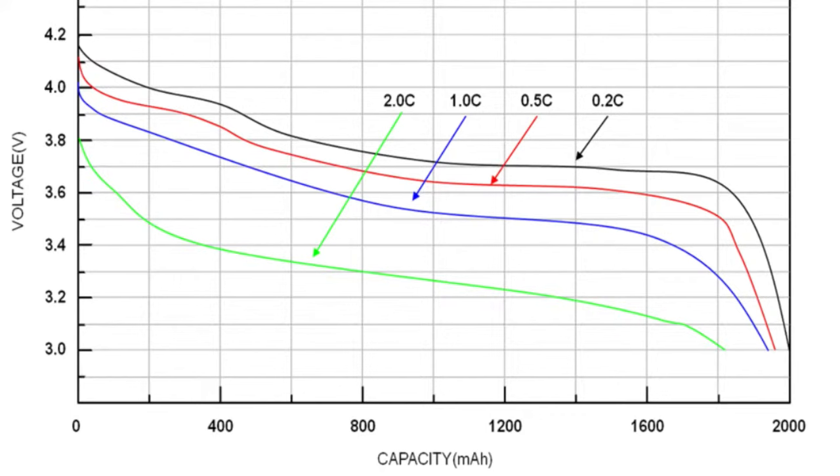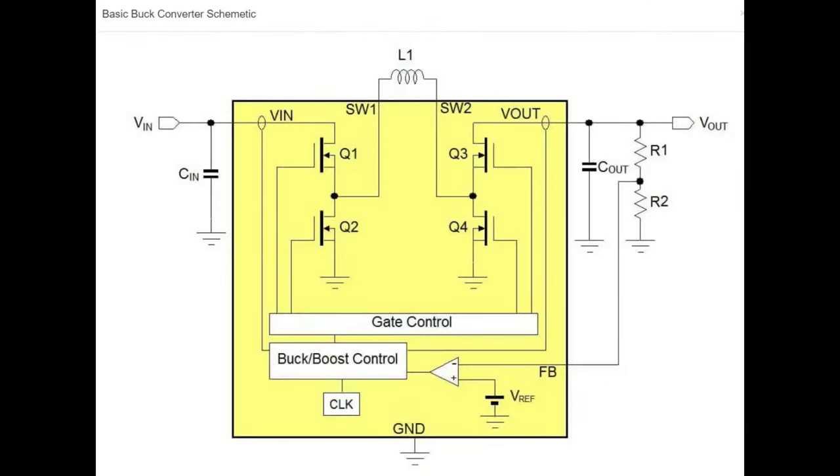So you want to use something like a buck boost. So when the voltage of the battery is above 3.3 volts, you'll buck it down and you use an efficient buck converter. So you're not losing any of that dropout voltage. And then if it's below 3.3, you'll boost it up. And a really nice design, as you see here, it's all inclusive. So you'll need one inductor.